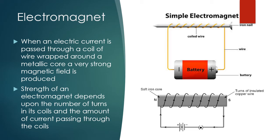Let's look at a simple electromagnet and how it works. You need an electric current passing through a coil. Here we have copper wire attached to a voltage source — a battery. You take that copper wire and wrap it around an iron nail. When you connect the ends of the circuit and let the current run through, that electric current makes the iron nail magnetic. The iron nail, which couldn't pick up any other nails on its own, now acts as a magnet and can pick up other nails.